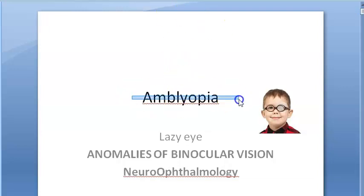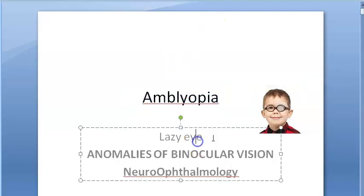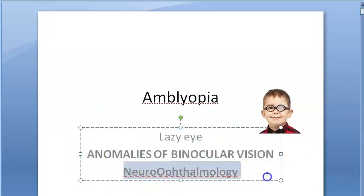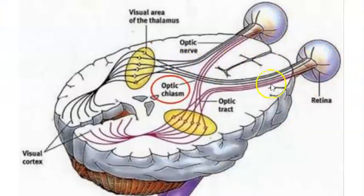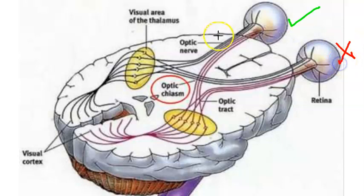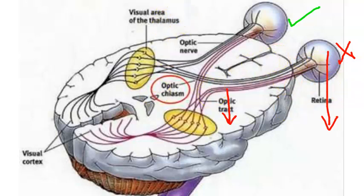In this video, let us look at amblyopia — basically it is lazy eye syndrome, coming under anomalies of binocular vision in neuro-ophthalmology. What is happening here is we have two eyes, and the eyes send information to our brain. One eye is good and the other eye is not so good. The brain will suppress the information coming from the bad eye and process the image from the good eye.